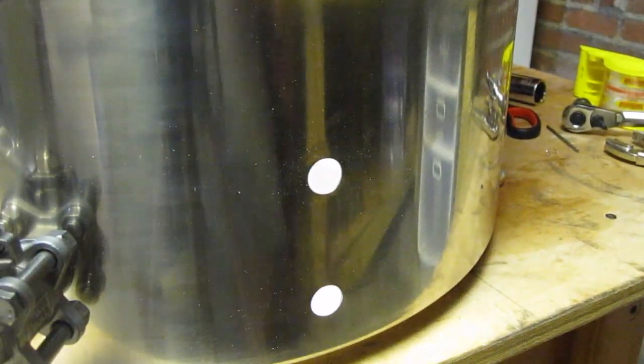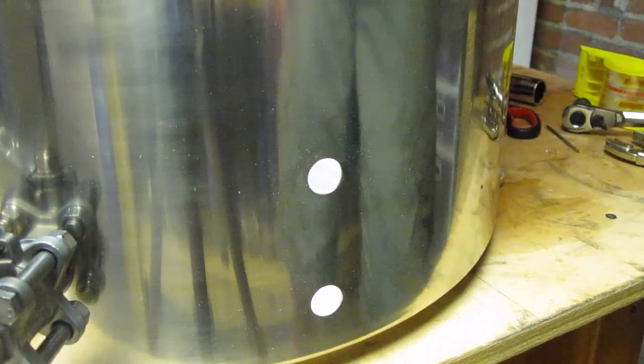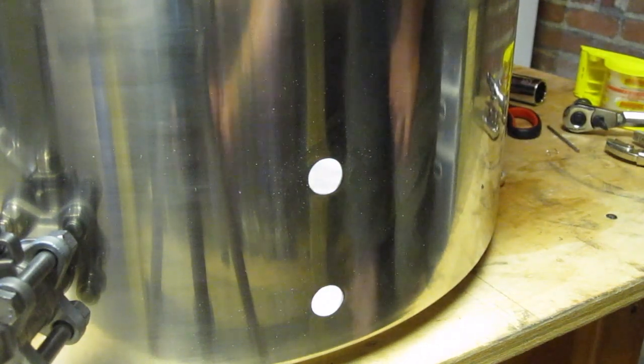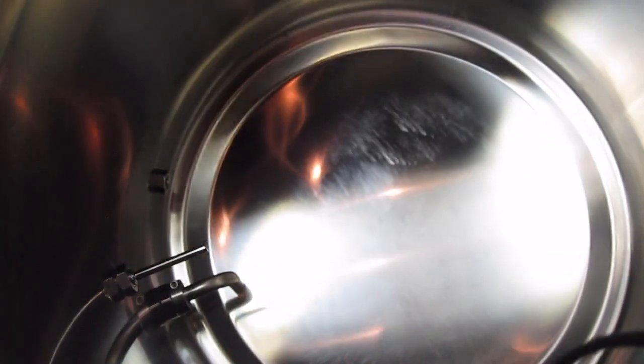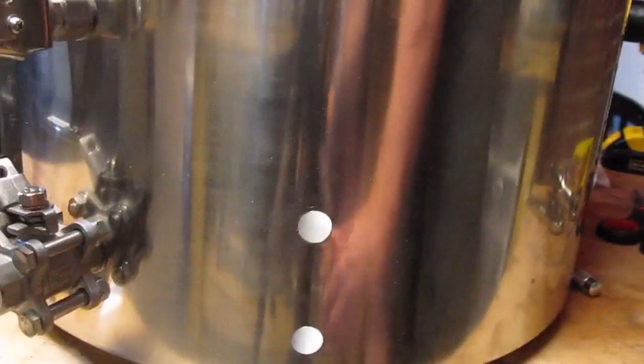So you can see now that I've got two holes right here that are perfect, 5/8 holes. And I've got this dip tube here that's in the way. You've got to get that out of the way.